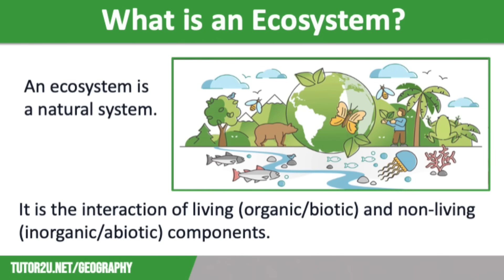Let's start off by defining what an ecosystem is. An ecosystem is a natural system — it is the interaction of biotic and abiotic components. Biotic components are those that are living and organic, whereas abiotic components are non-living and inorganic.